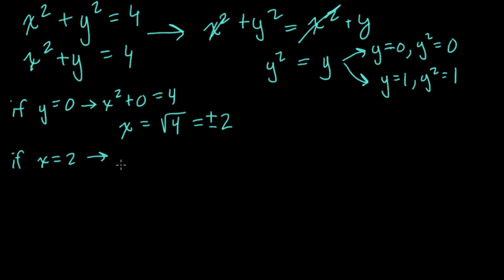What about negative 2? If x equals negative 2, we have negative 2 squared plus 0, and that also equals 4. So everything's working, and we have our intersection point.